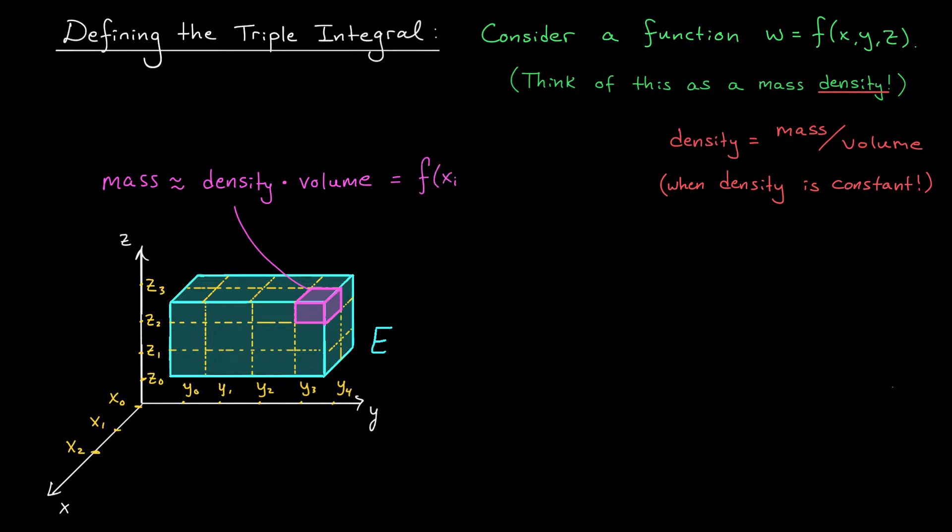The density is given by our function f at some point (xi, yj, zk), and the volume of the piece is the volume of this little cube, Δx times Δy times Δz. Just as before, we're going to add up these approximate masses to estimate the total mass of our solid. The exact mass can then be obtained by taking a limit of these approximations as our pieces get smaller and smaller.